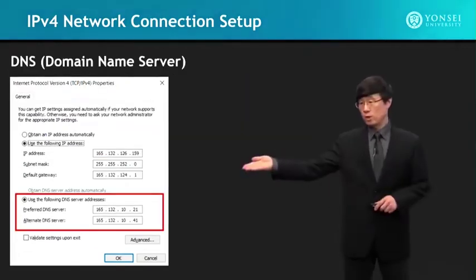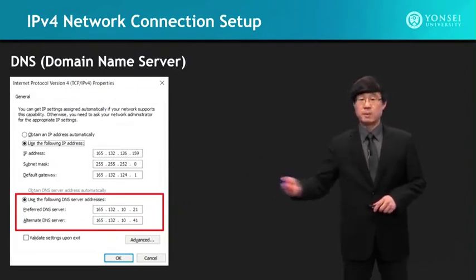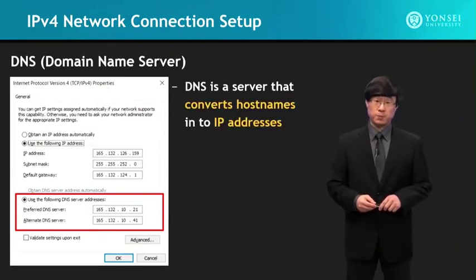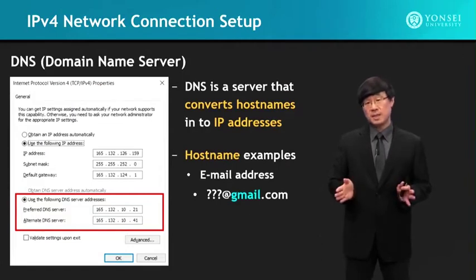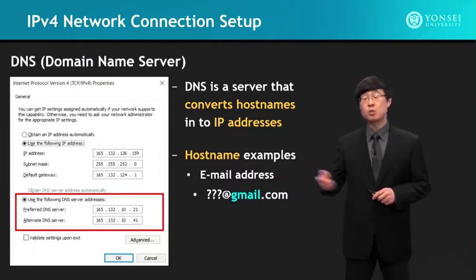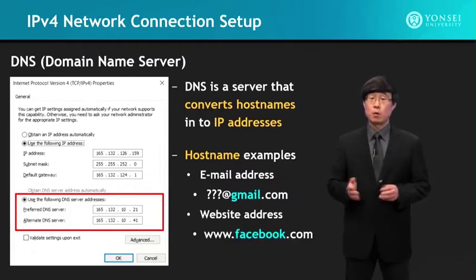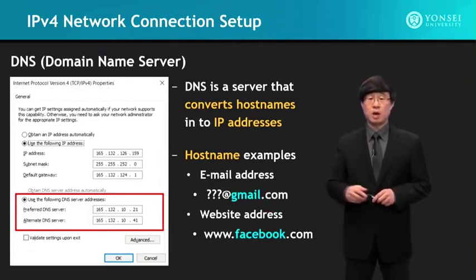In the window over here, you can see 'use the following DNS server address,' and there is a preferred DNS server and an alternate DNS server IP address. DNS stands for Domain Name Server — it's a server that converts host names into IP addresses. A host name example would be gmail.com if you're an email user, or www.facebook.com for a website — facebook.com would be the host name.